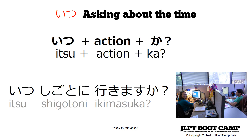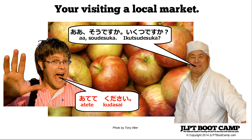To finish the conversation, Ojisan replies 'Aa, so desu ka, ikutsu desu ka?' — oh I see, how old are you? And you reply 'Atete kudasai.' 'Atete' is the te-form of 'ateru,' which means to guess. Basically this means 'please guess my age.'